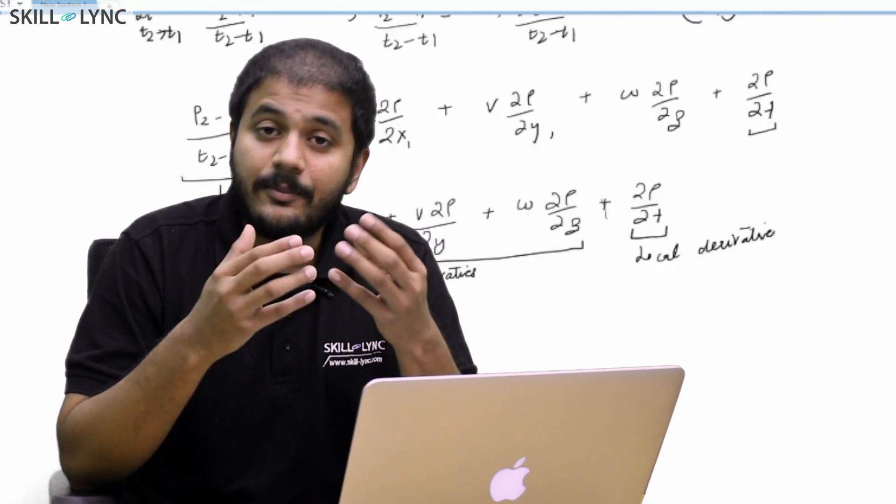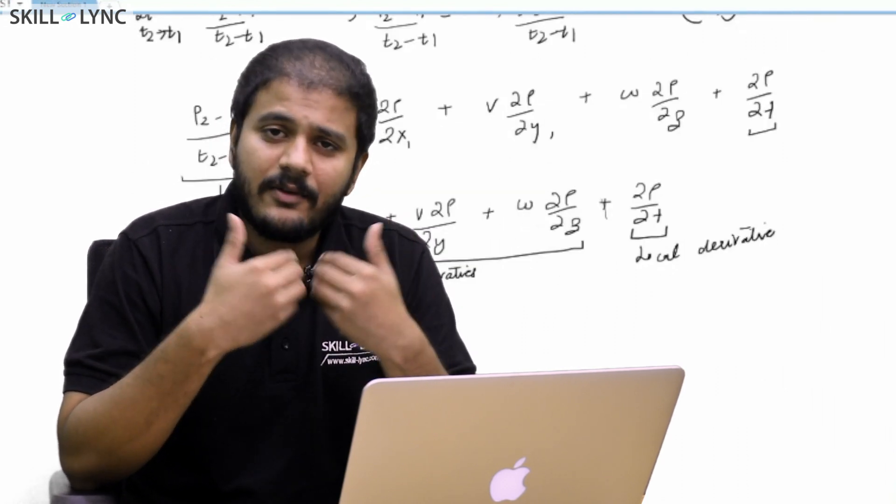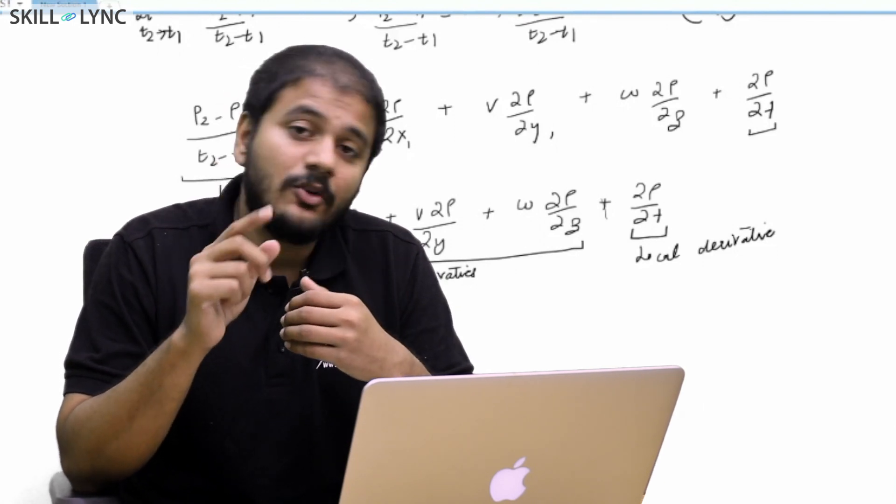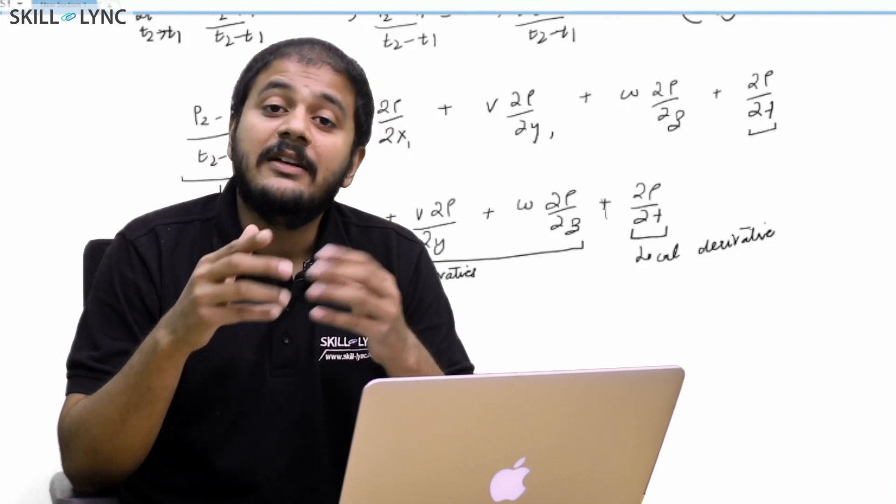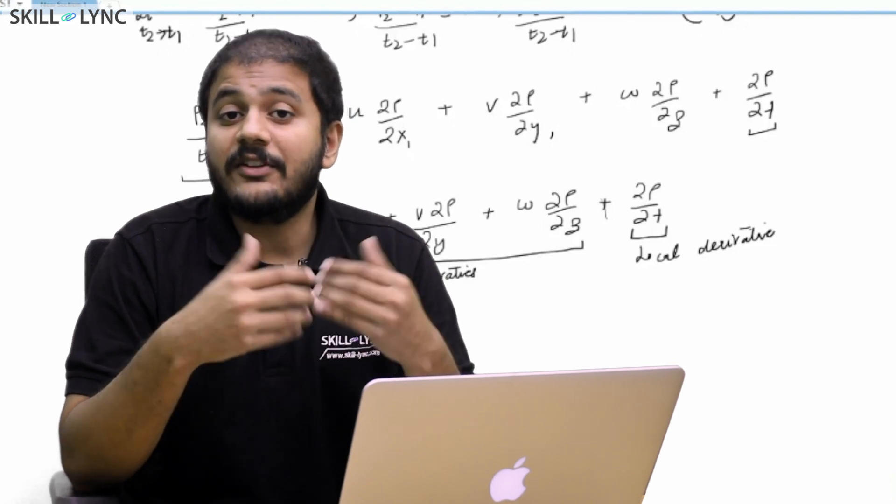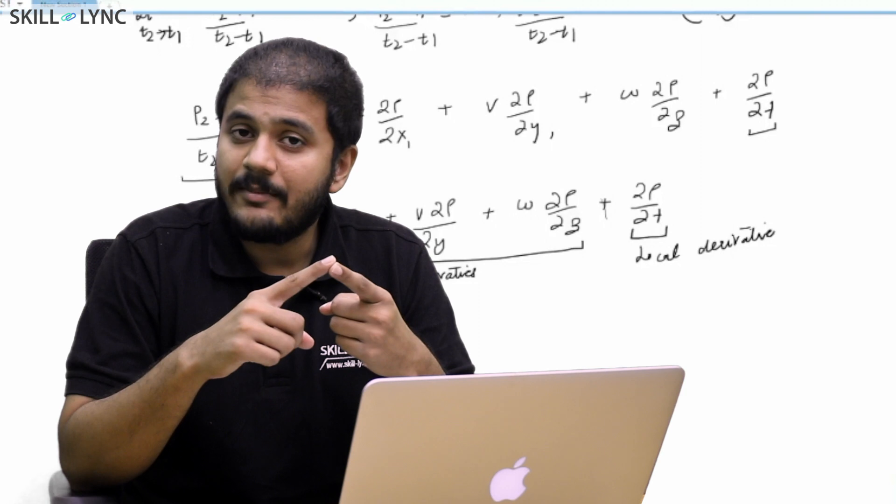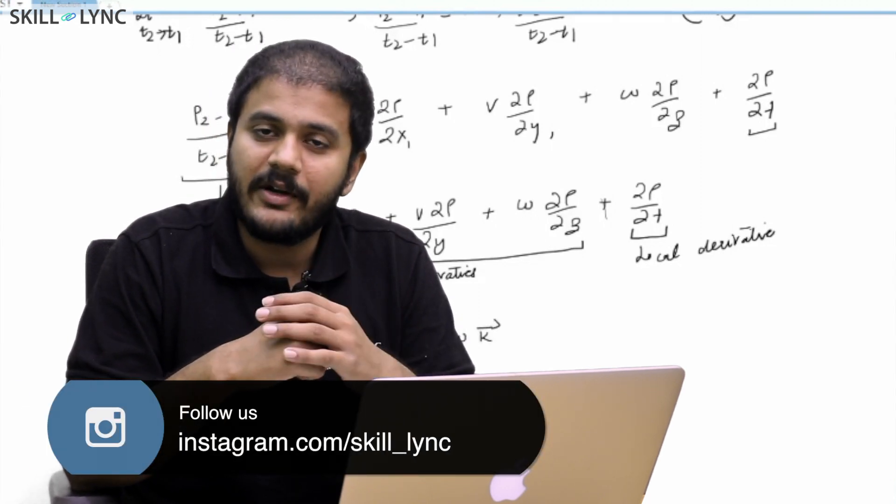A second definition is where you're an observer who is actually sitting far away from the fluid in a stationary reference frame, and then you're tracking the changes on the fluid element as it moves. This type of derivative is called a substantial derivative. It contains two parts: one is the local time derivative and the other part is called the convective derivative.